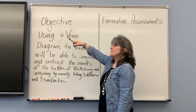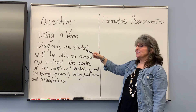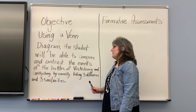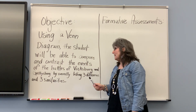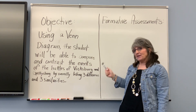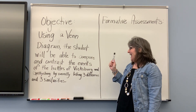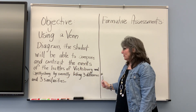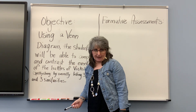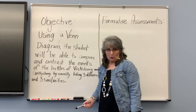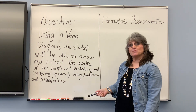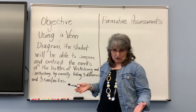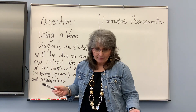For example, my learning objective is: using a Venn diagram, the student will be able to compare and contrast the events of the battles of Vicksburg and Gettysburg by correctly listing three differences and three similarities. That is my objective for the lesson I'm going to teach.